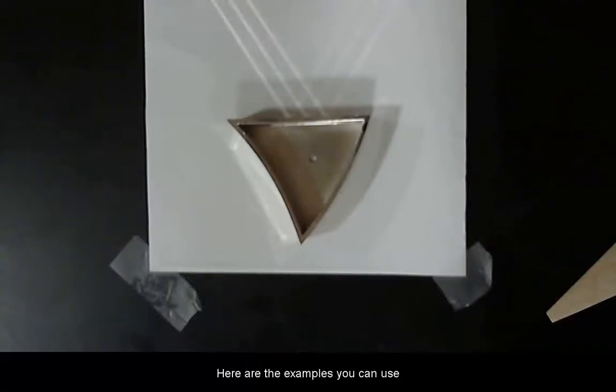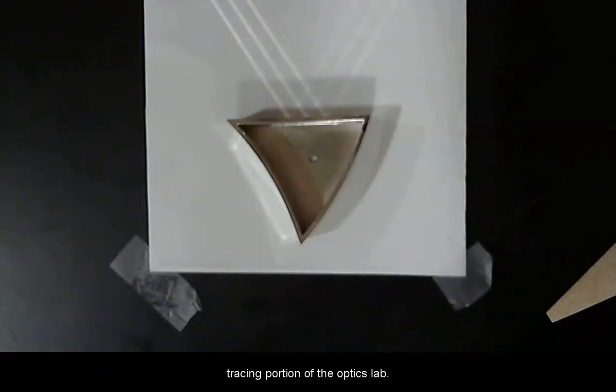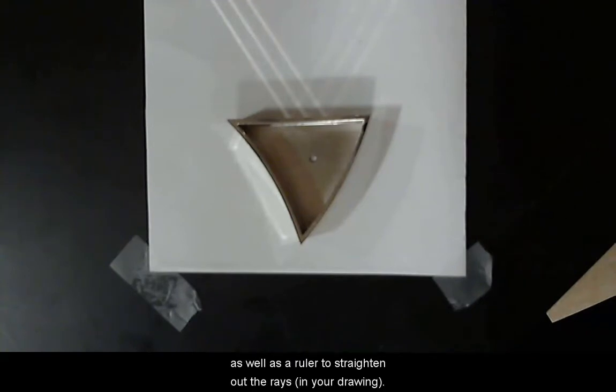Here are the examples you can use for the parallel incident ray tracing portion of the optics lab. You will need a piece of paper and pencil as well as a ruler to straighten out the rays. You will not need to do any angle measurements in this portion of the lab.